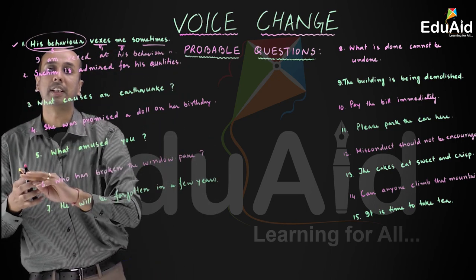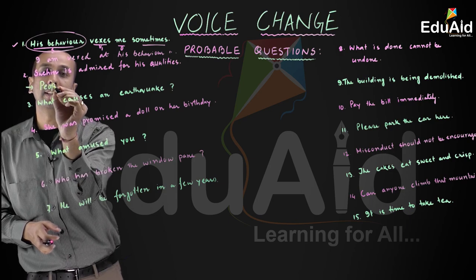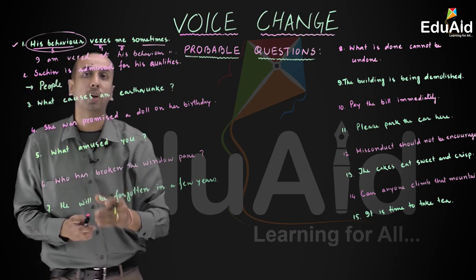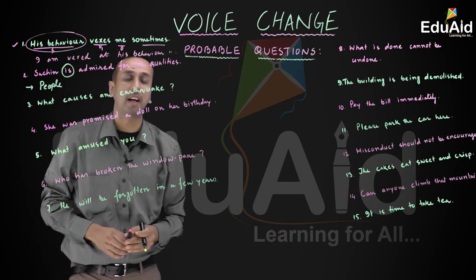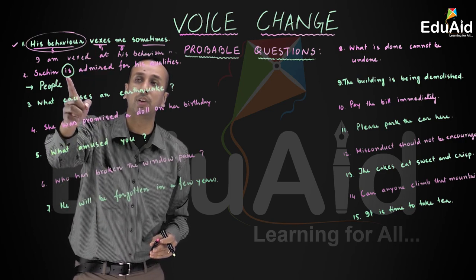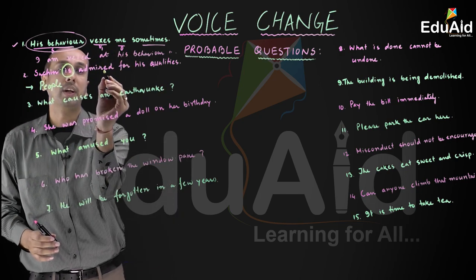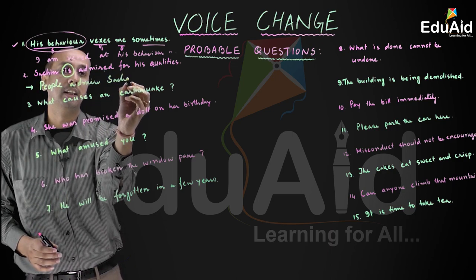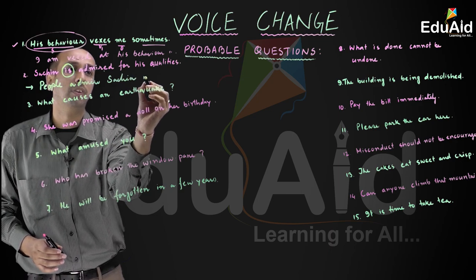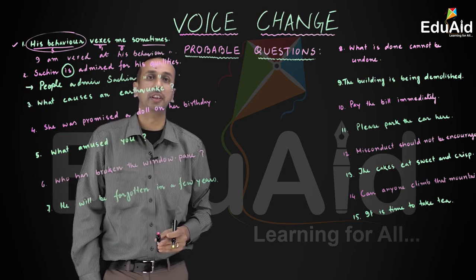So we bring in 'people' as the subject. Looking at the auxiliary verb 'is,' the tense in active will be present. So the active form becomes: 'People admired Sachin for his qualities.' That is the answer to question number two.